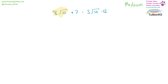8 square root 10 minus 3 square root 10, plus 7 minus 12. 8 square root 10 minus 3 square root 10 gives us 5 square root 10, and plus 7 minus 12 gives us minus 5. So the answer is 5 square root 10 minus 5.